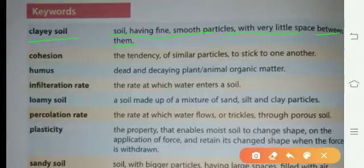Next, cohesion: the tendency of similar particles to stick to one another. ایک ہی طرح کے particles کی ایک دوسرے کے ساتھ چپکنے کی جو tendency یعنی کی رجحان ہوتی ہے اس کو cohesion کہا جاتا ہے. جیسے clay soil ہے وہ اس کو ہم کوئی بھی shape دے دیتے ہیں کیونکہ اس کا cohesion level بہت اچھا ہوتا ہے اس کے particle ایک دوسرے سے آسانی سے چپک سکتے ہیں.